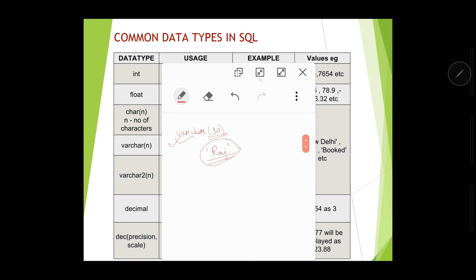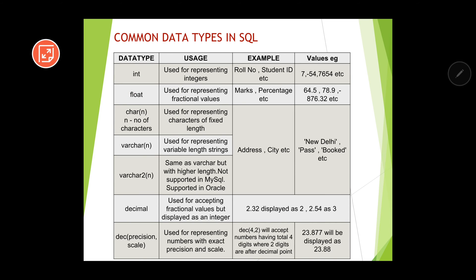Another data type similar to varchar but better is varchar2, though it is not supported in SQL — it is supported in Oracle. Examples of situations where varchar or varchar2 is used are address, city — values like 'New Delhi', 'Pass', 'Booked', etc. The difference between char and varchar — one allocates memory statically, one allocates memory dynamically — is often asked in the exam.